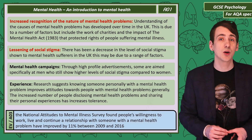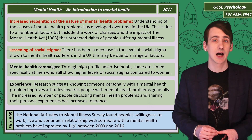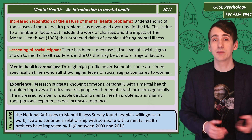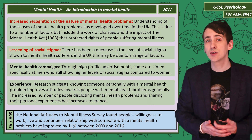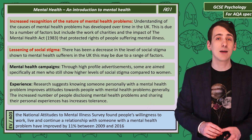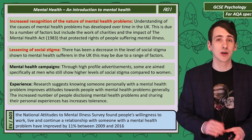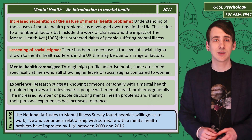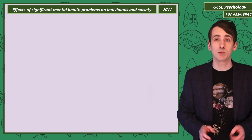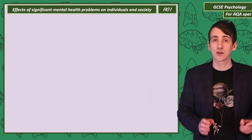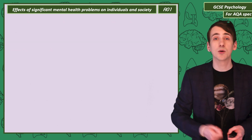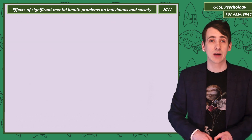Research suggests knowing someone with a mental health condition improves attitudes generally. As more people disclose mental health conditions and share their experiences, tolerance is increasing. A national survey shows this improvement over time — people's willingness to work, live, and continue a relationship with someone with a mental health problem increased by 11% between 2009 and 2016. We'll finish this introduction by considering the effects mental health problems have not only on the individual, but on society more generally.